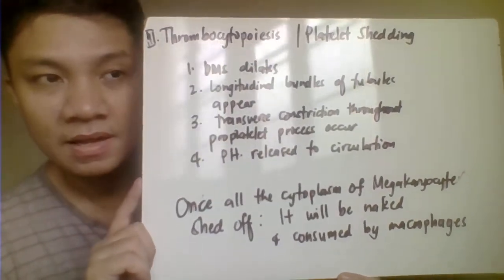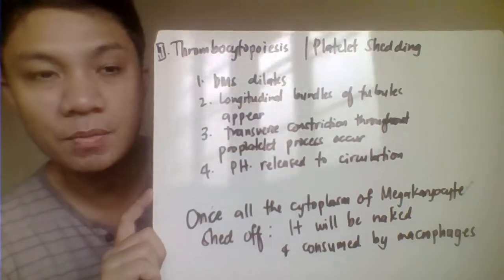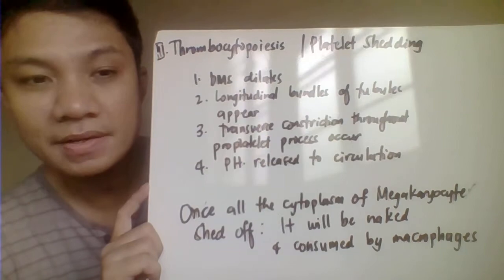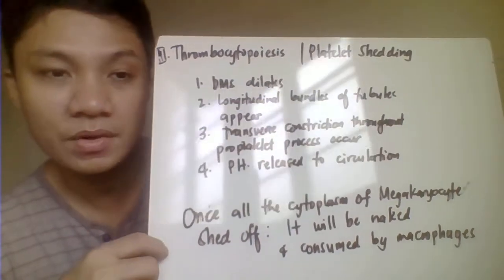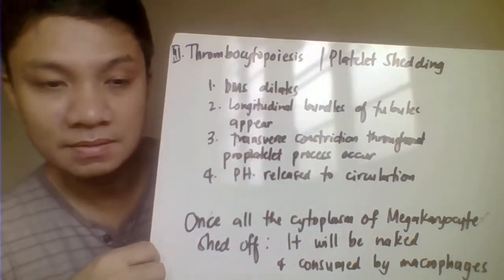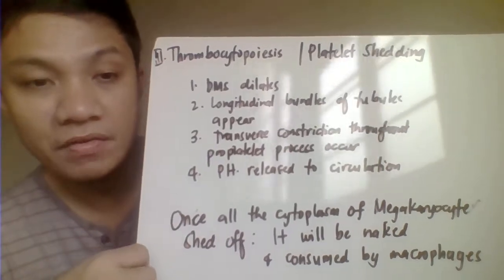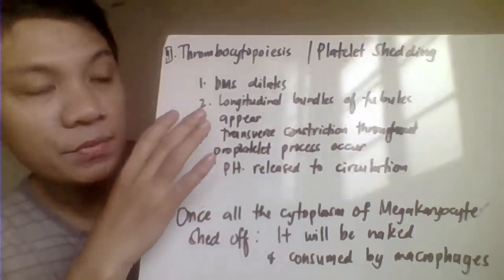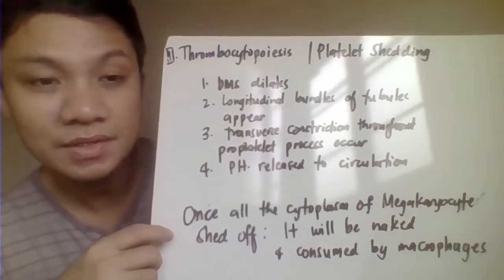Next we have the platelet shedding, or what you call thrombocytopoesis. The platelet shedding is the process whereby the cytoplasm of your megakaryocyte tries to shed and eventually become individual platelets, which are then further released into your peripheral circulation to circulate as platelets. So we have the processes that happen during your thrombocytopoesis.